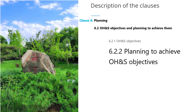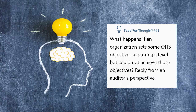Clause 6.2.2 requires that the organization shall determine how the objectives shall be achieved. This includes resource allocation, establishing responsibilities, and setting a monitoring strategy and timeline. Auditors will be looking at the procedure for how this process is carried out and records of previous OHS objectives — for example, what were the objectives and what actions were taken to achieve them?